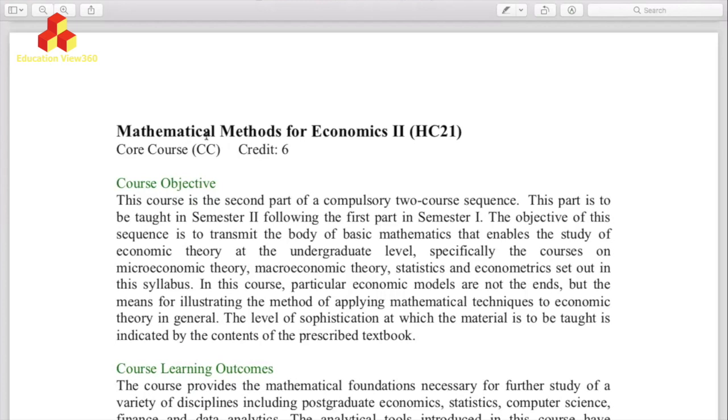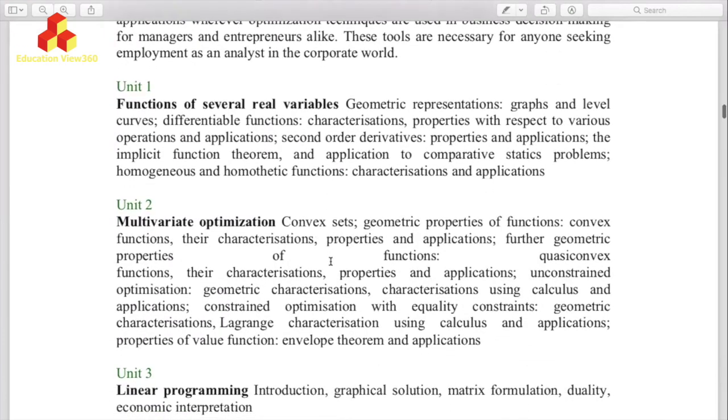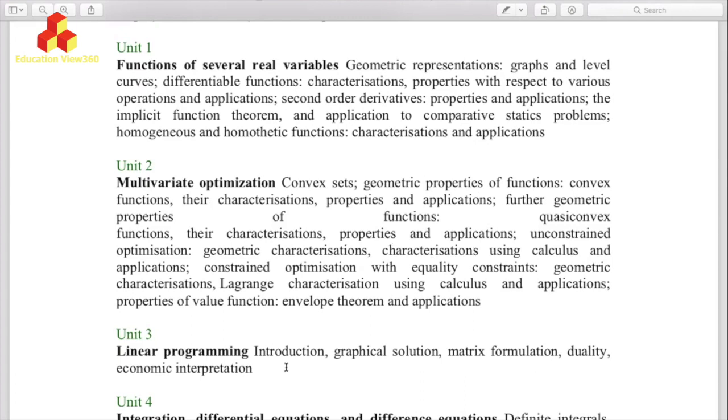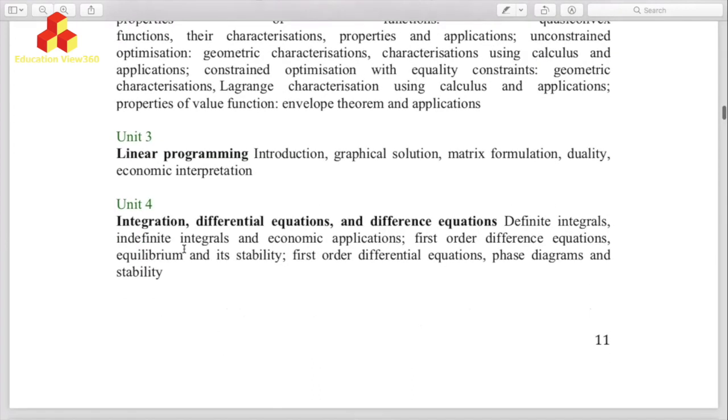Now in second semester what you will study is Mathematical Methods for Economics 2. This is also 6 credits. Now look at its concepts: functions of several real variables, geometric representations, graphs and level curves, differentiable functions, characterizations, properties with respect to various operations. Then in unit 2, multivariate optimization: convex sets, geometric properties of functions, convex functions, their characterization properties and applications. In unit 3, linear programming: introduction, graphical solution, matrix formulation, duality, economic interpretation. Unit 4 has integration, differential equations and difference equations.